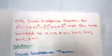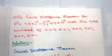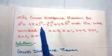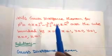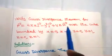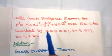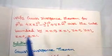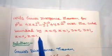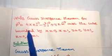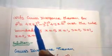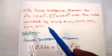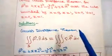First problem: verify the Gauss Divergence Theorem for F = 4xz i − y² j + yz k over the cube bounded by x = 0, x = 1, y = 0, y = 1, z = 0, and z = 1. We have to verify the Gauss Divergence Theorem for the given vector over this cube.